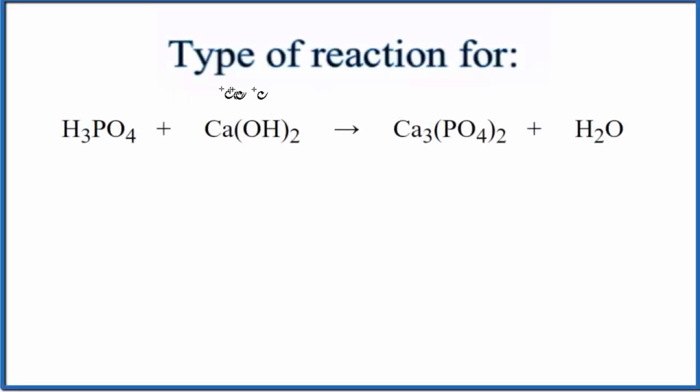In this video, we'll take a look at the type of reaction for H3PO4 plus Ca(OH)2. This is phosphoric acid, this is calcium hydroxide.